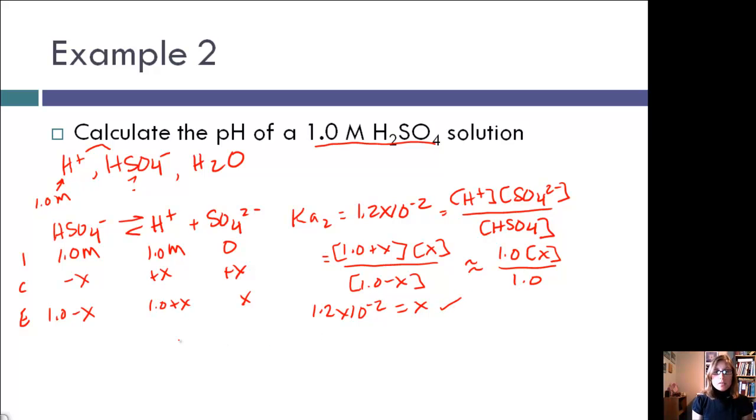So that means that our H+ concentration is equal to our initial 1 plus 1.2 times 10 to the negative 2. Well, if we go based on significant figures, that's equal to 1. So we can see that the dissociation of HSO4 did not affect our pH at all. So if we want to find pH, this is equal to the negative log of H+, which is equal to the negative log of 1, which equals 0.